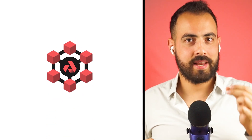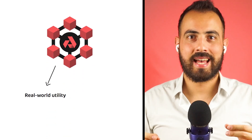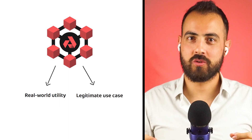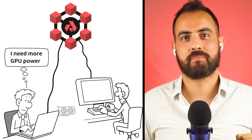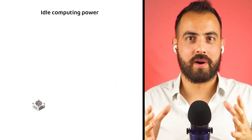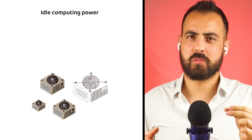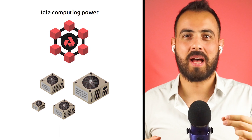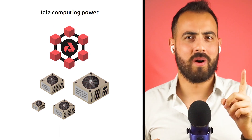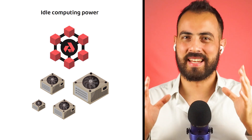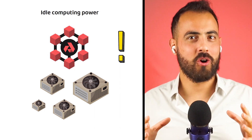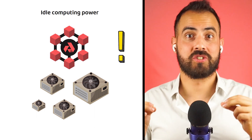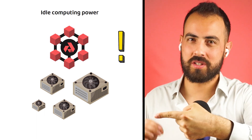Akash has managed to create a project with real-world utility and a legitimate use case. In short, if you need GPU power for a project, Akash knows a person and they will link you up. With the demand for idle computing power only likely to increase with time, it seems possible that the best days for Akash Network may still lay ahead. Though, as always, it is wise to remember that nothing is guaranteed in crypto. If you liked this video on Akash Network and want to learn more about shared computing resources, click here to watch the video on Render.